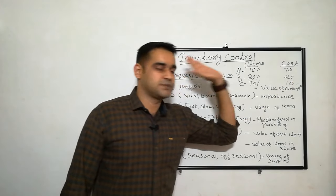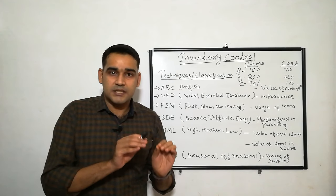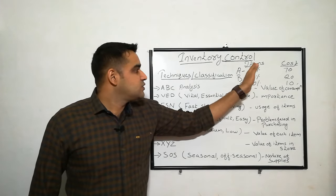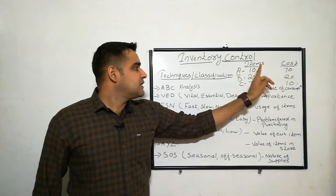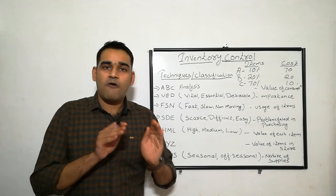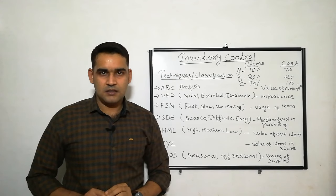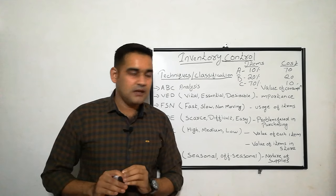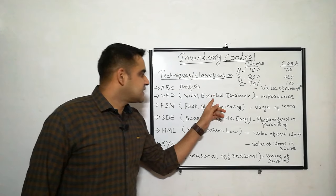ABC analysis is classified on the basis of value of consumption. Each item is consumed — how much value of consumption annually. The consumption value is 70%, 20%, and 10% respectively. The value of consumption consumed by each item annually is the basis for ABC analysis.